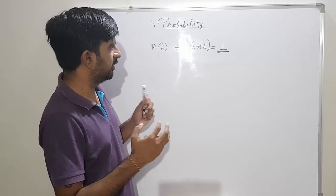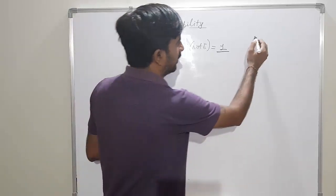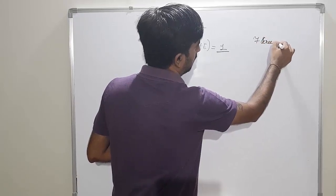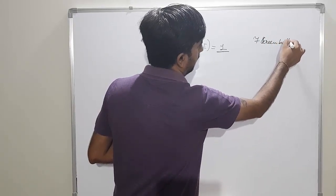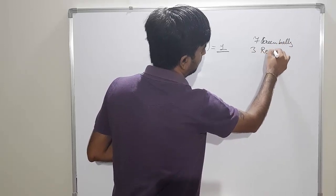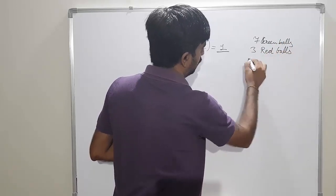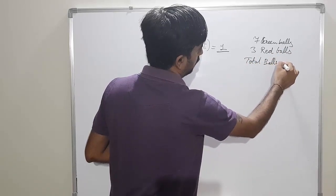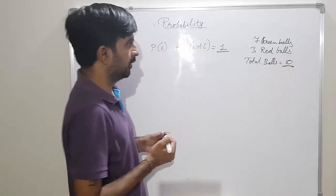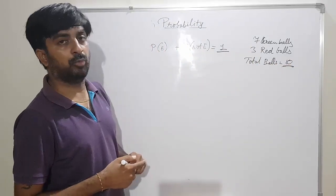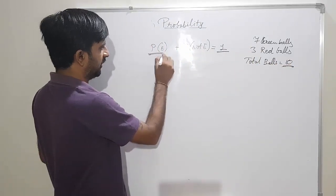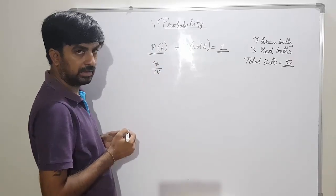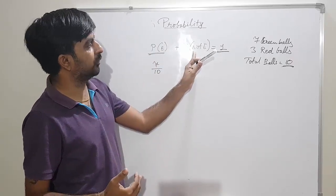You are having ten balls in a bag — seven green balls and three red balls. Total balls equals ten. If I say, what is the probability of getting green balls? Probability of getting green balls is seven by ten.